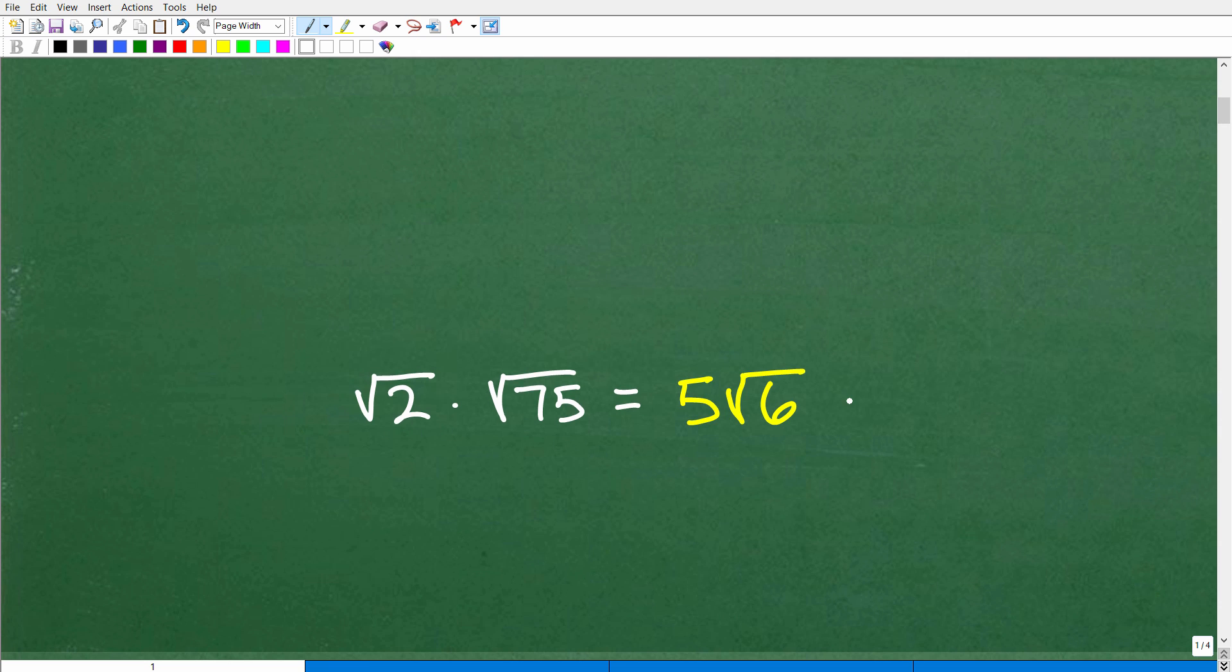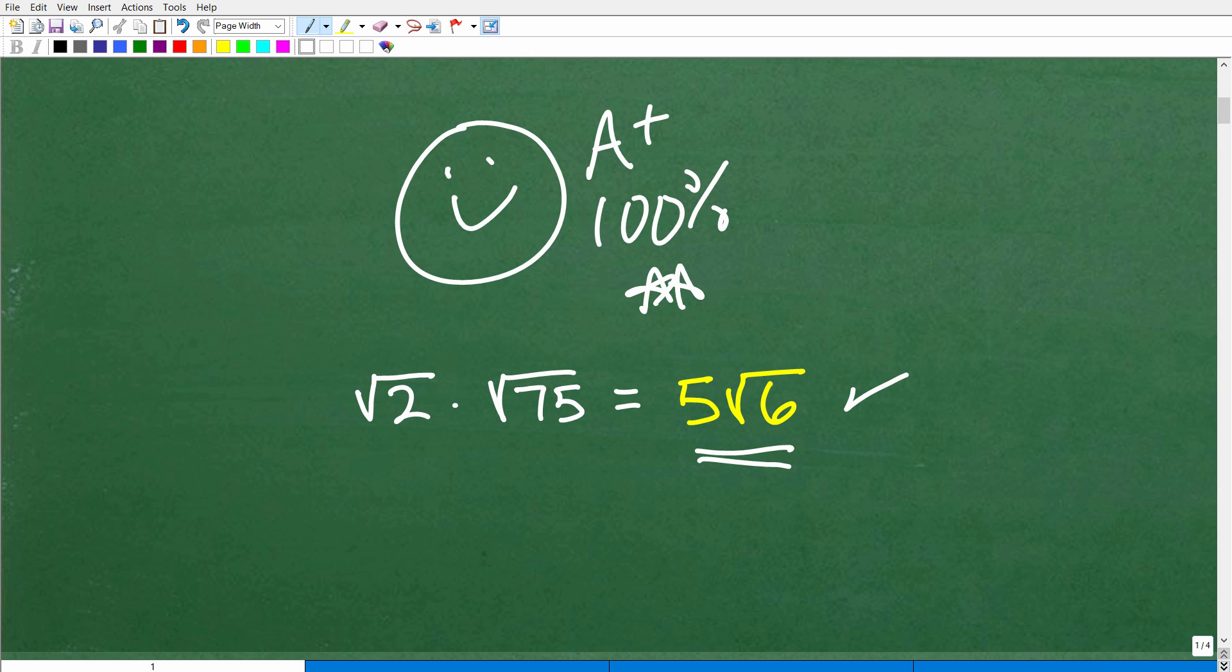Okay, so I'm going to show you the solution to this problem right now. The square root of 2 times the square root of 75 is equal to 5 times the square root of 6. That is the correct answer. And if you got this answer, let me give you a nice happy face, an A-plus, and 100%. We'll throw in a few stars so you can have an extra special day.